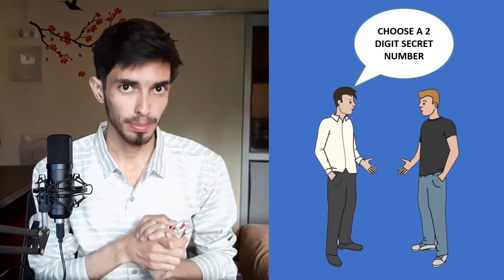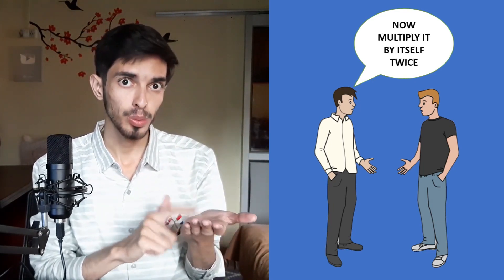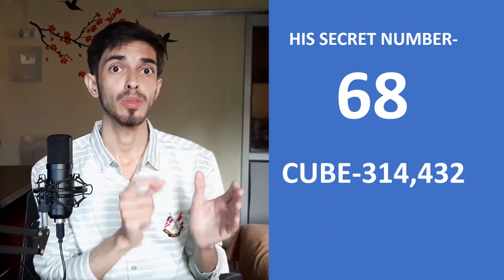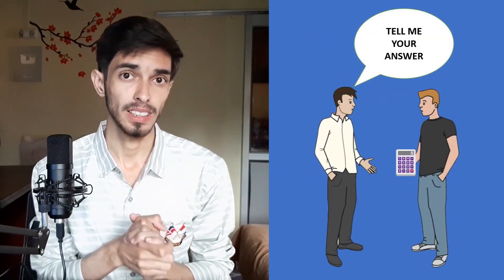I will explain this by taking a simple example on how you can perform this trick in front of an audience. Ask your friend to choose any two-digit secret number that he won't tell you, then using a calculator, cube that number — multiply it by itself two times. Let's say he chose the number 68, and its cube is 314,432. Tell him to give you this answer, which is 314,432, and you will tell him his secret number.